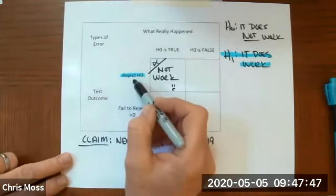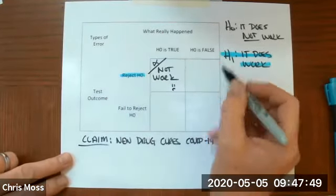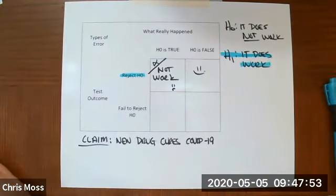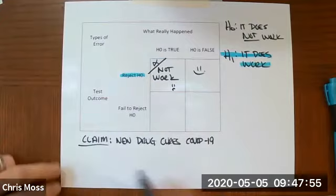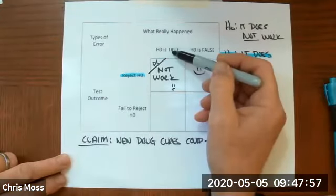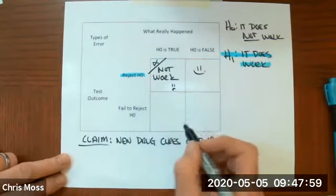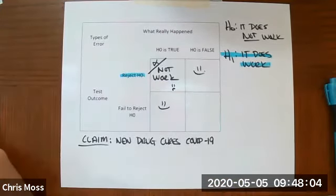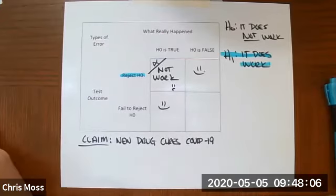On the other hand, if we reject the null hypothesis and the null hypothesis is indeed false, the test has done a good job. If the null hypothesis is true and we fail to reject the null hypothesis, we've done the right thing. The test has come up with the correct result.